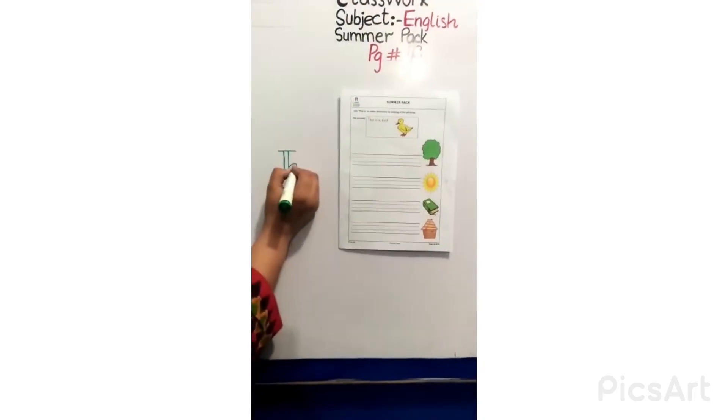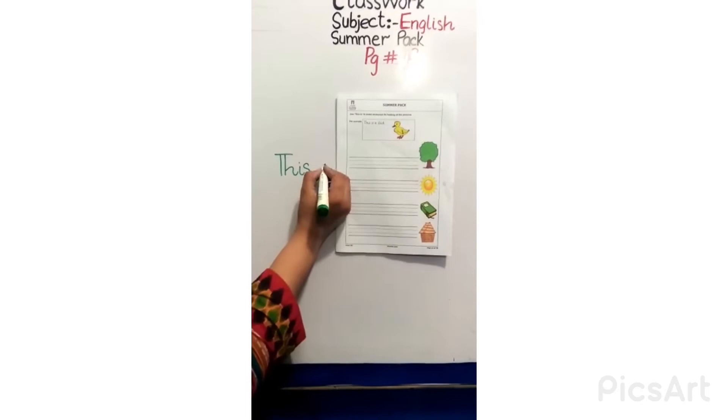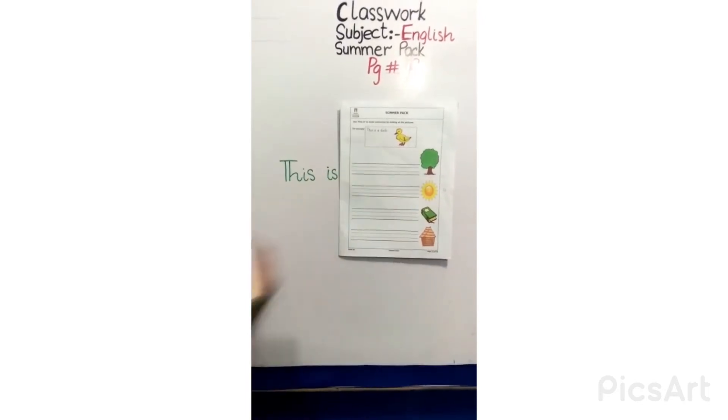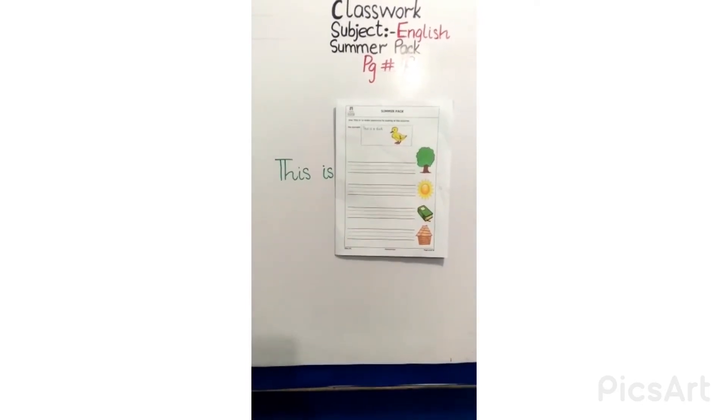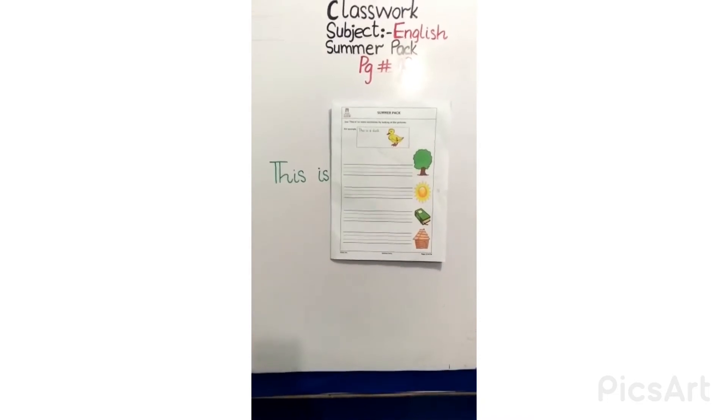T, H, I, S, this and then is. Like this is a book, this is a chair, this is a table, this is a tree, this is a sun, etc.